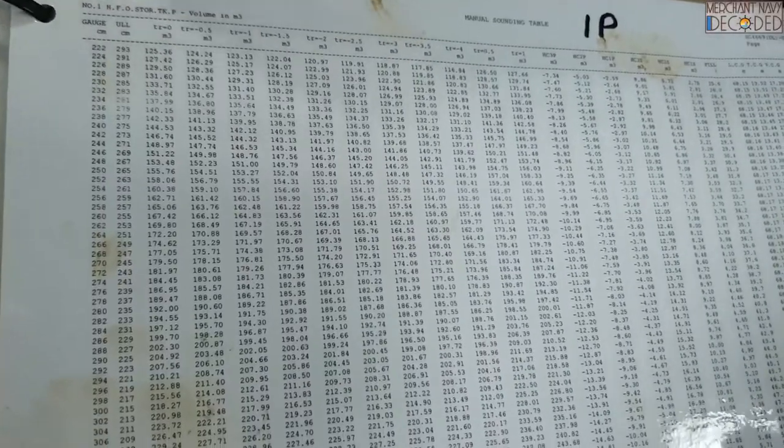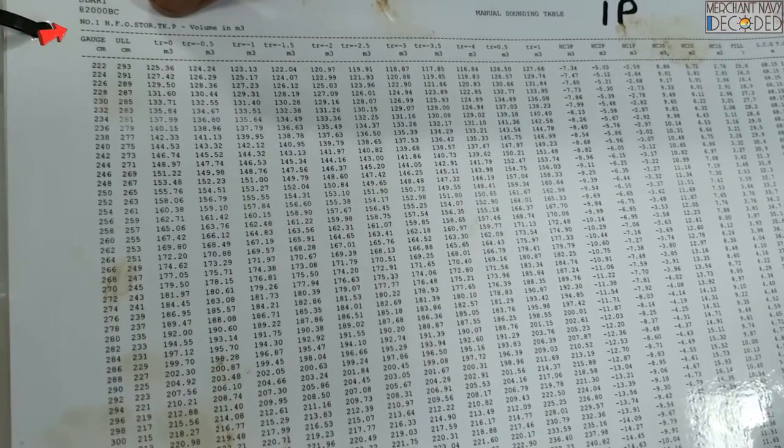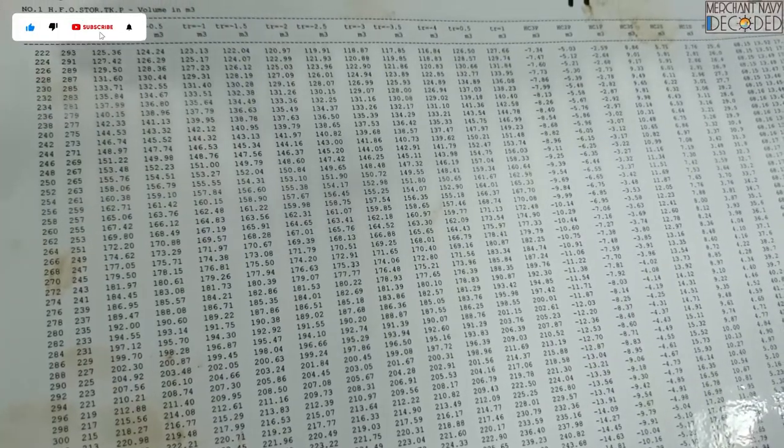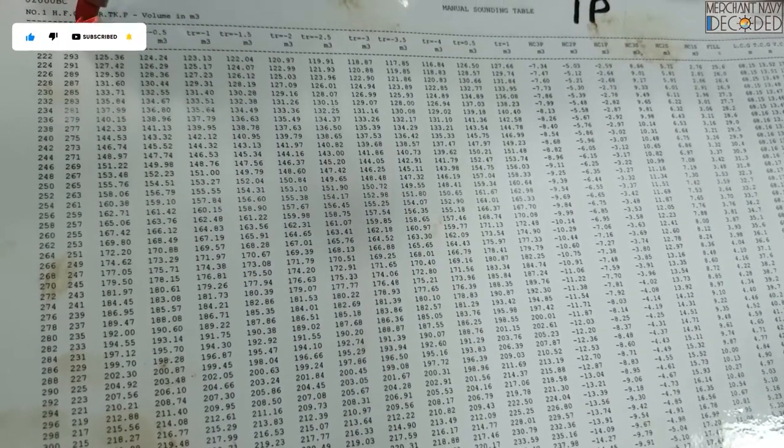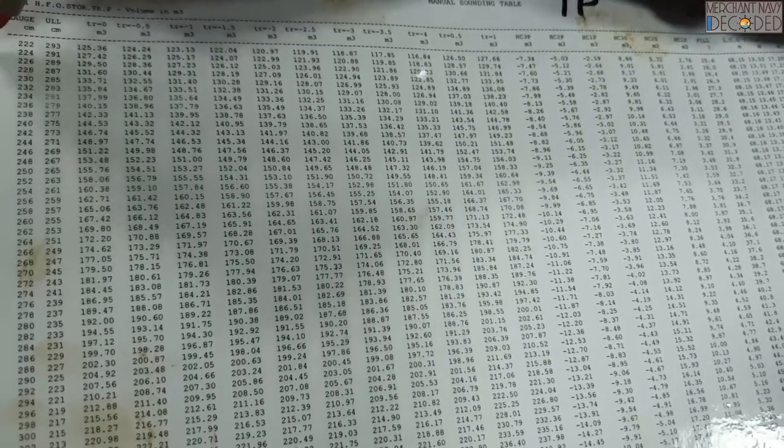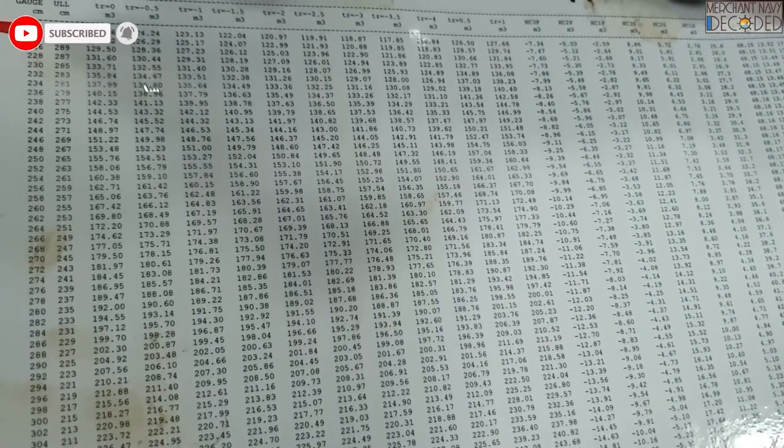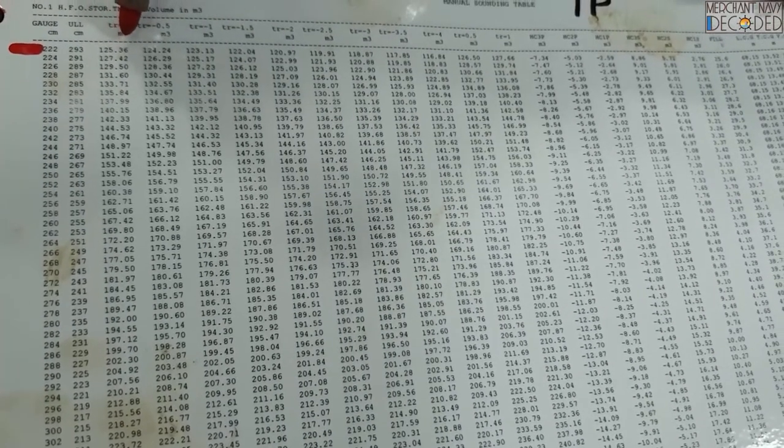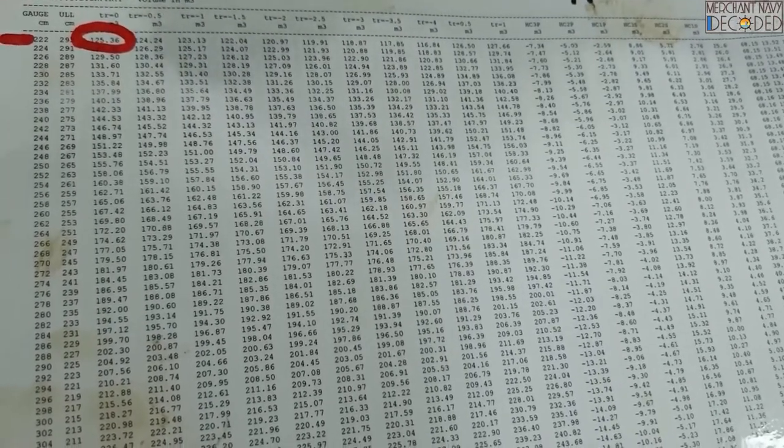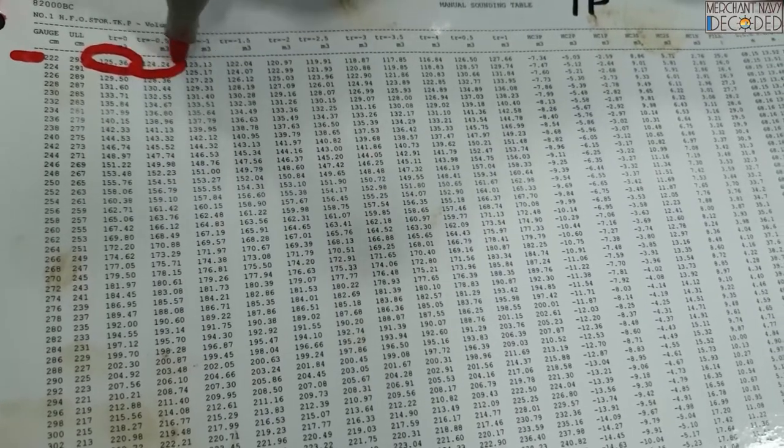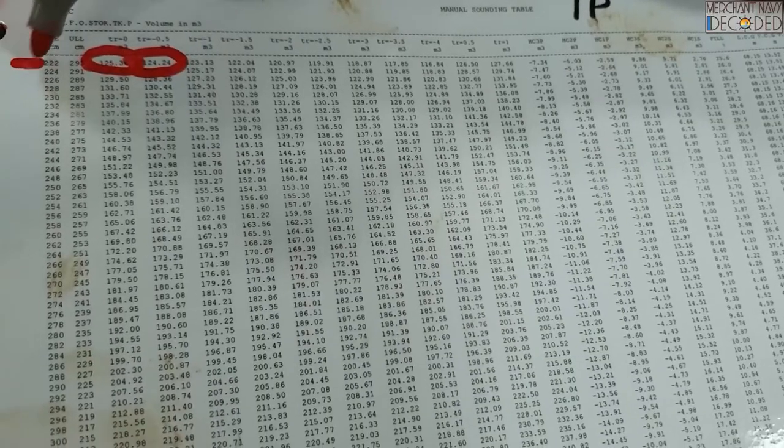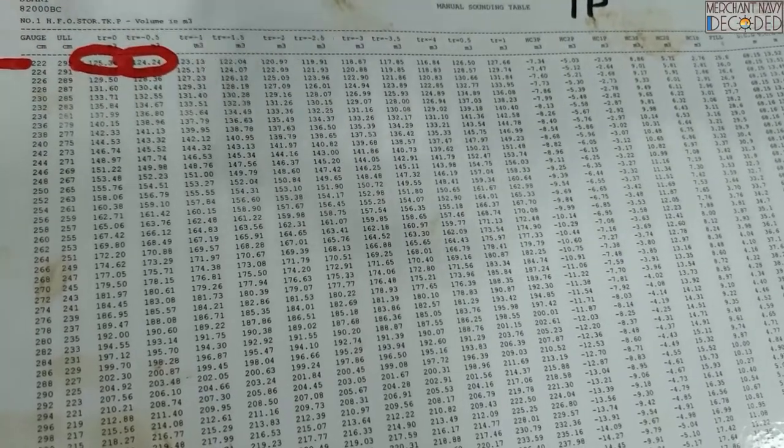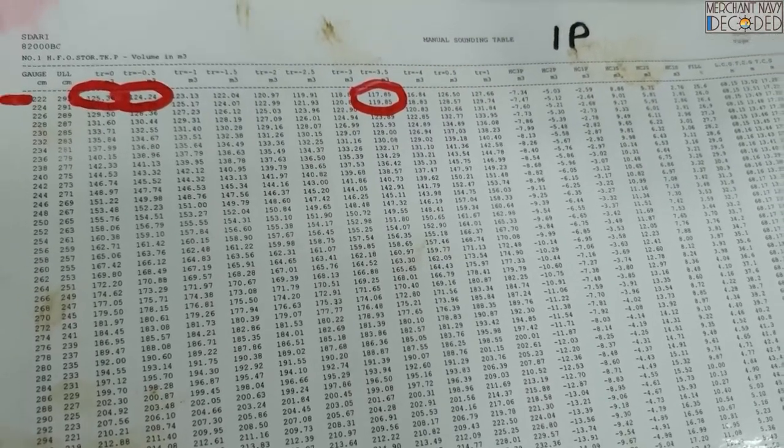Now come over here. Now guys see, suppose this is number 1 HFO storage tank. You can see over here. This is written number 1 HFO storage tank. This is the tank. Now you can see over here. This is written gauge centimeter. Gauge is sounding. And this is ullage. So it depends what have you taken. Suppose you say the gauge centimeter sounding is 222 centimeters. This is the sounding. So trim is 0, so how much is the volume? It is 125.36 meter cubes. Suppose now trim becomes minus 0.5, your volume has changed. It becomes at same sounding that you have got in the measuring tape, your volume has changed. When the trim becomes minus 4 meters, at that time, at same sounding on the sounding tape, your volume has changed considerably.